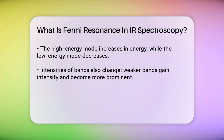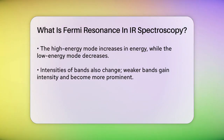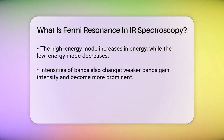Another example is in aldehydes, where the C-H bond in the CHO group interacts with the second harmonic level of the CHO group's deformation vibration. This interaction creates a Fermi doublet with peaks around 2830 and 2730 cm⁻¹.